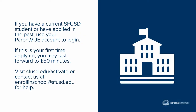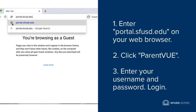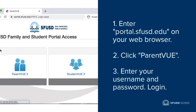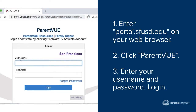If you have a current SFUSD student, or you've applied in the past, you can use your ParentVue account to log in. Enter portal.sfusd.edu on your web browser, click ParentVue, and then enter your username and password to log in.